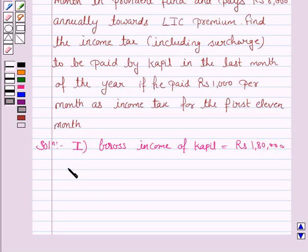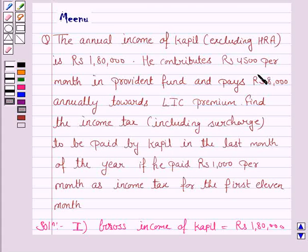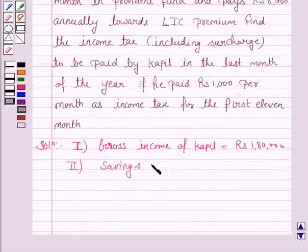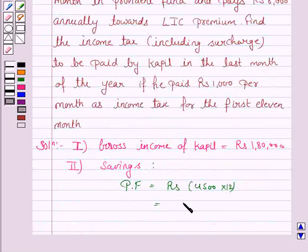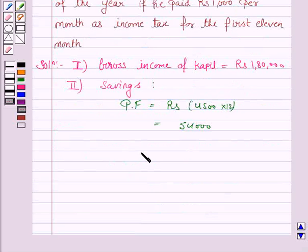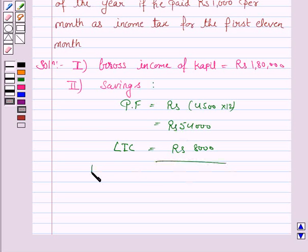The second step is to find all the savings. We are given that he contributes Rs. 4,500 per month in Provident Fund, that is PF = Rs. 4,500 × 12 = Rs. 54,000. And he pays Rs. 8,000 annually for LIC. So the total savings is Rs. 62,000.